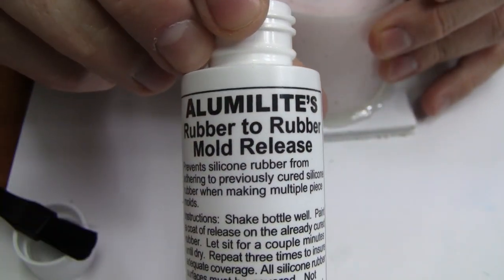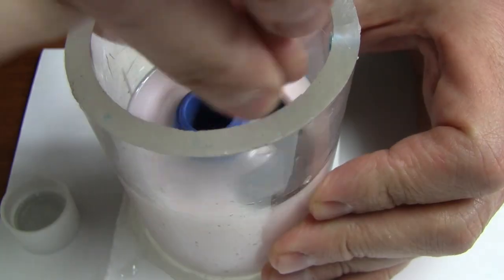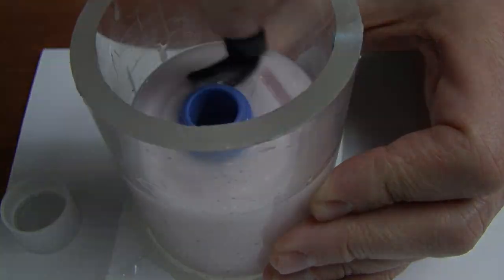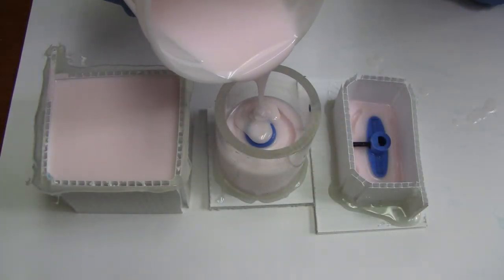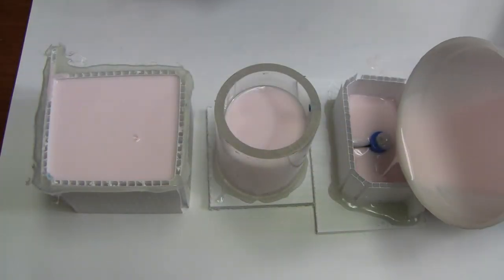Once we have our locators cut in, we need to apply about three coats of LumaLite's Rubber-to-Rubber Mold Release. This will prevent the two halves from fusing together. Then mix up your high-strength silicone and pour your second halves of the mold.